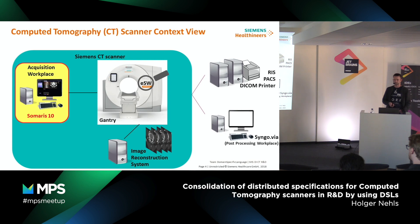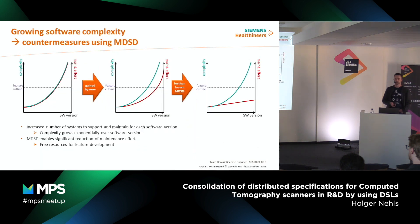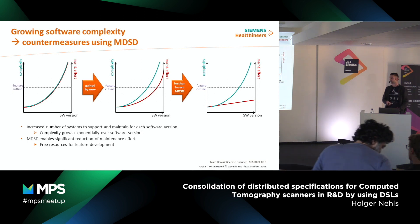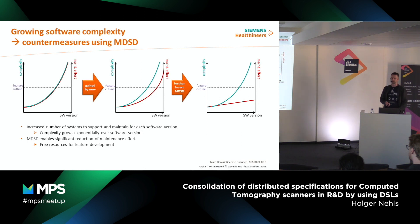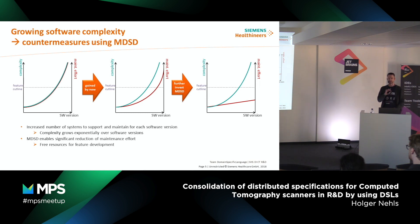And that's the main motivation: our software has to deal with different kinds of scanners in one software version, which means the complexity will grow exponentially. Currently we have to support four different scanners. With the next version we have to support seven, then 13, and so on. Each scanner has its own variabilities and properties, so we also have an exponentially growing maintenance effort.